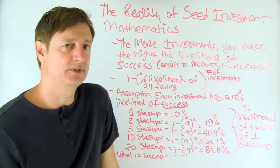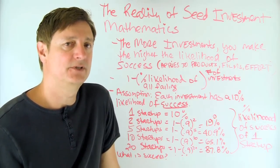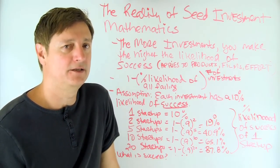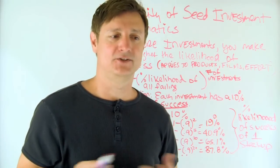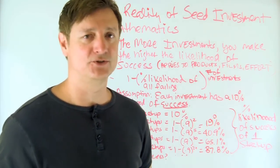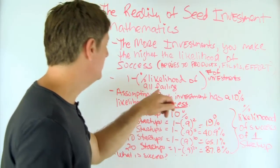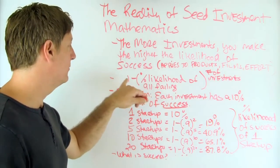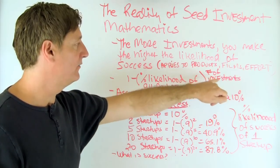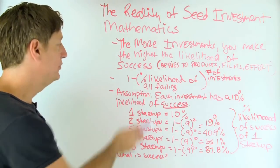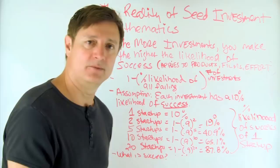And this is how actually the venture capitalists operate. Most of the venture capitalists understand that you're playing the numbers game, so you have to be able to invest into at least 10 startups to get a super hit, so you hope. But bottom line is that if you look at this formula, 1 minus percent likelihood of all failing to the power of number of investments, what you can do is you can play with the numbers a little bit.